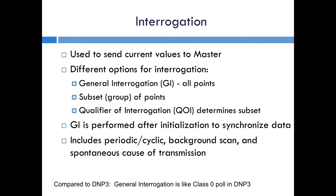This is basically like a class zero poll in DNP3. The standard also specifies what will be included in this interrogation — basically all of the relevant cause of transmission. So it includes periodic, cyclic, background scan, and spontaneous. Pretty much all of the data.